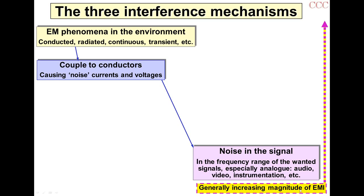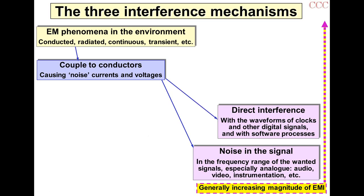If we gradually increase the magnitude of the interference, we'll see direct interference with the waveforms of clocks and other digital processes, and of course with software. Digital circuits have some noise immunity — so-called noise margin. A good design will have a good noise margin, but once you exceed that noise margin, all bets are off. It's sometimes called the digital cliff: it's fine, it's fine, it's fine, and suddenly it's haywire. With an analog circuit, as you increase the noise level it just gets proportionally louder.